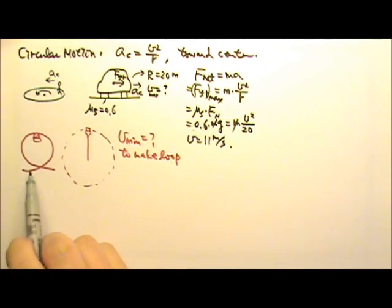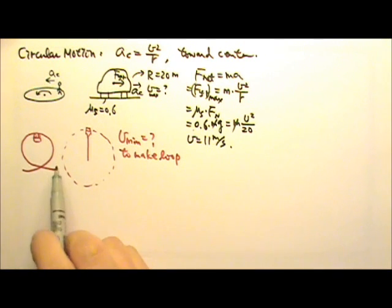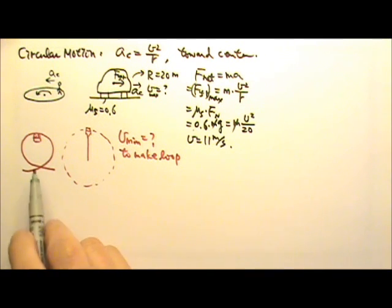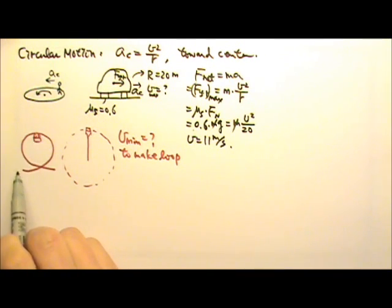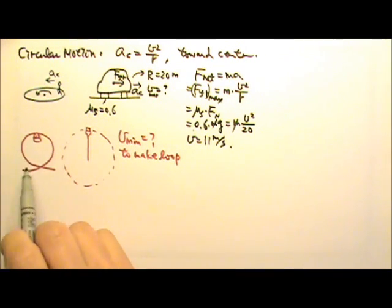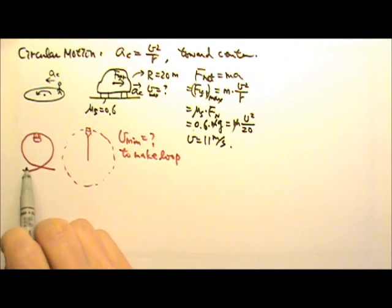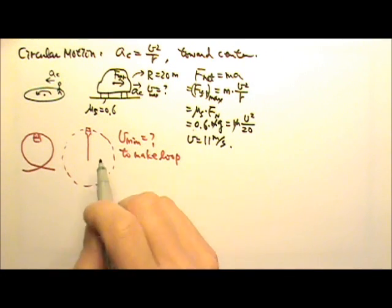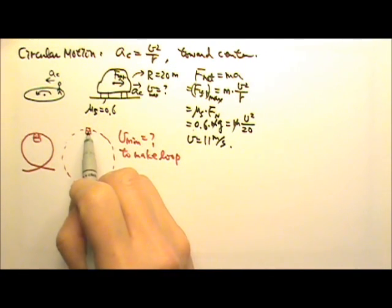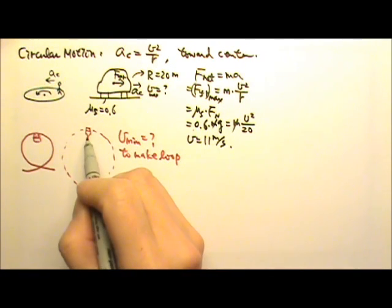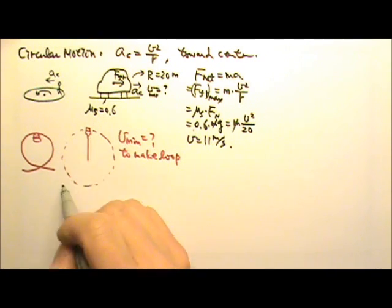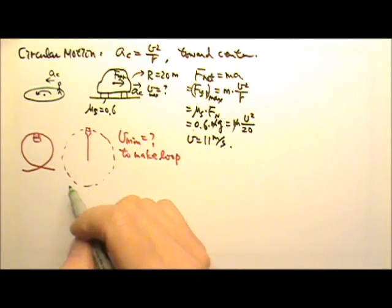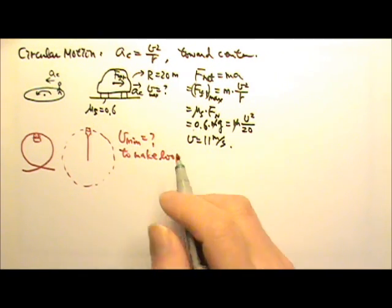We've also done problems involving vertical circles. For example, a roller coaster making a loop in a vertical circle, and a water cup with water tied on a string and whirled around in a vertical circle.